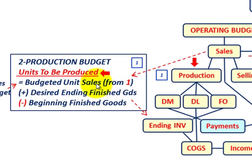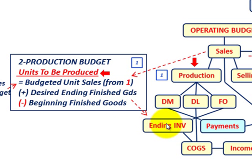Knowing our budgeted units of sales, we would add to it our desired ending finished goods. Then we would also be subtracting the beginning finished goods from our units that have to be produced. So we're dealing with our finished goods and our sales budget, and based on our desired ending finished goods, our beginning finished goods, and the budgeted unit sales, we can determine the units that have to be produced.